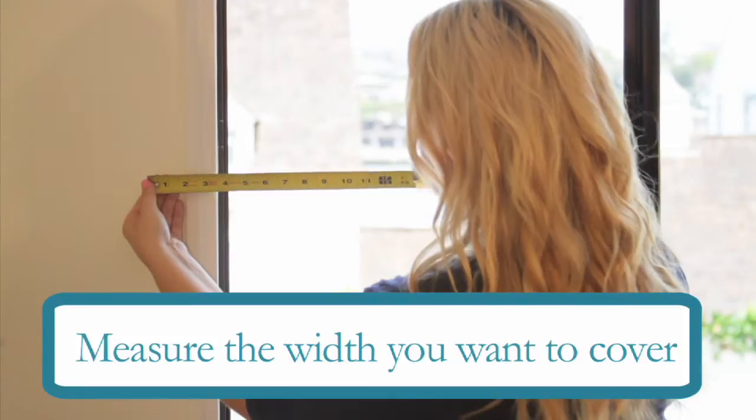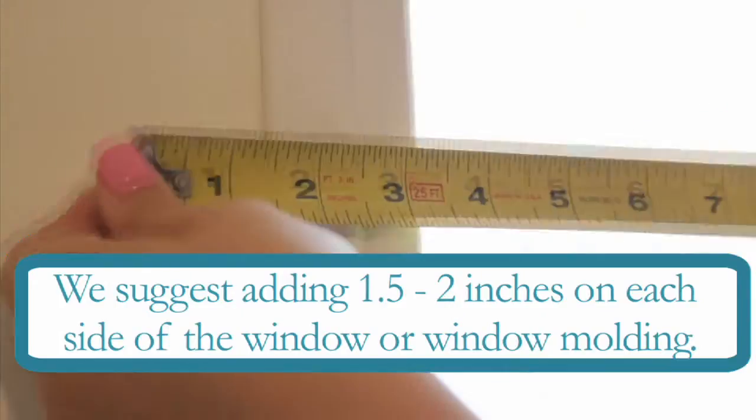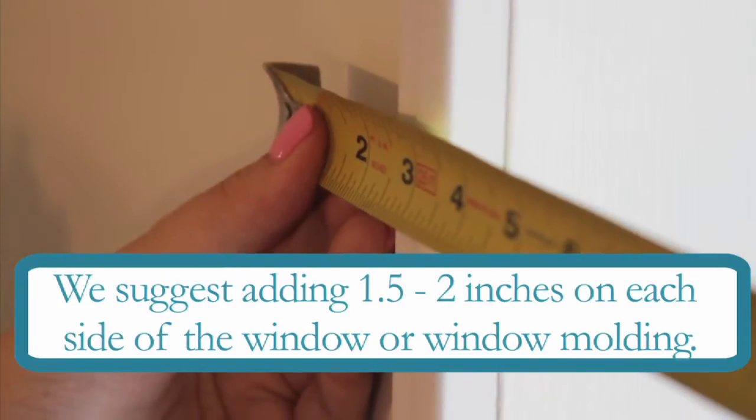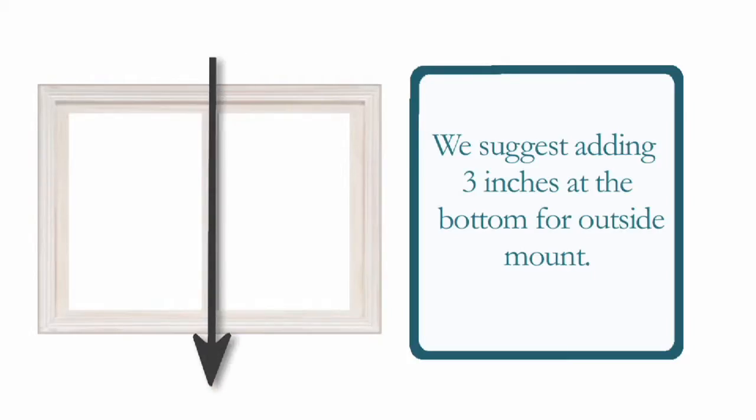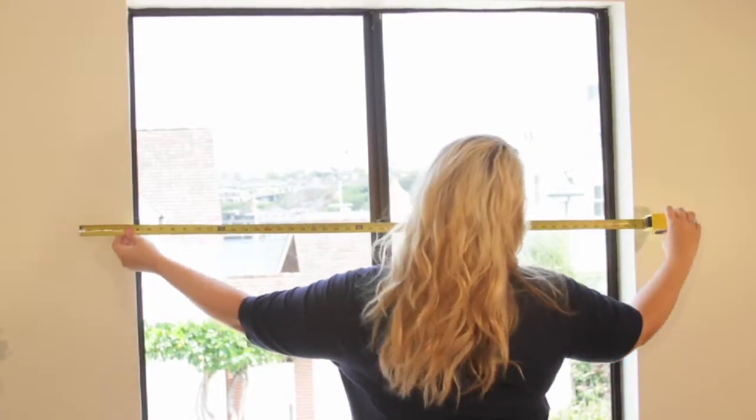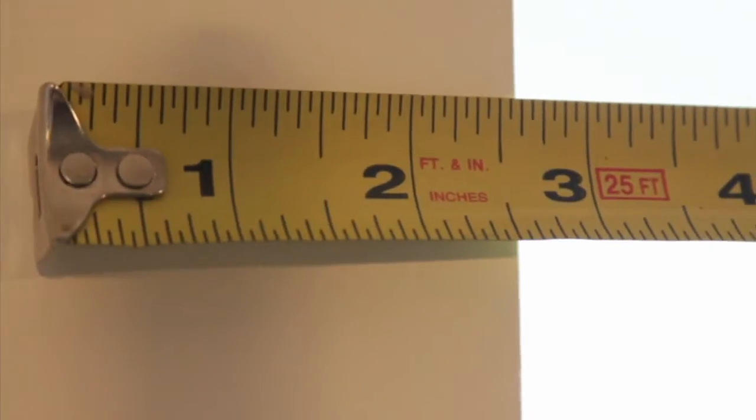First, measure the width you want to cover. We suggest adding one and a half to two inches on each side of the window or window molding. We also suggest adding three inches at the bottom. You'll want to make sure your window and window molding are completely covered by your window treatment.